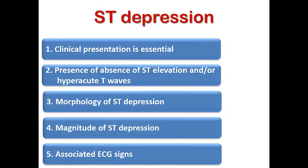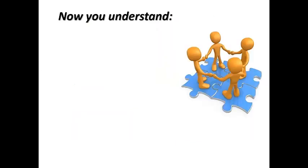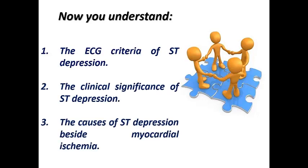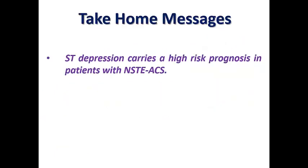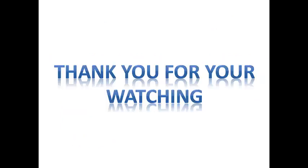In summary, these are the famous causes of ST depression, with non-ST elevation ACS and STEMI as the first possibilities, followed by non-ischemic causes. Today we understood the ECG criteria of ST depression, their clinical significance, and the causes of ST depression besides myocardial ischemia, and how to differentiate between them. Take-home message: ST depression carries a high-risk prognosis in patients with non-ST elevation ACS, but it is not always non-STEMI — it can be part of reciprocal depression with STEMI, left main equivalent, or DeWinter syndrome. Always check whether co-existing ST elevation is present before jumping to a diagnosis of non-STEMI.